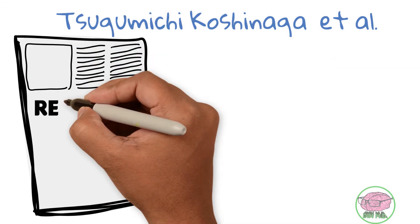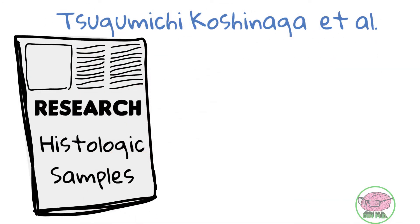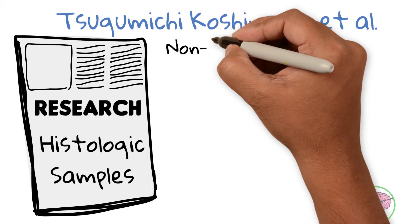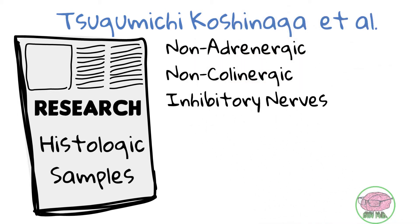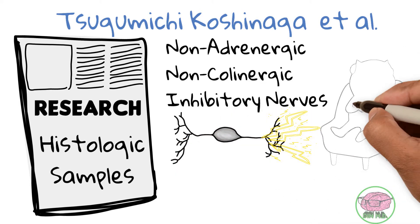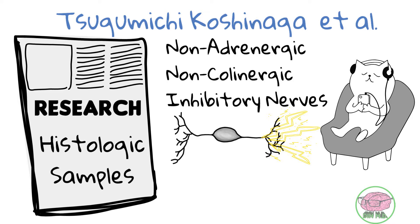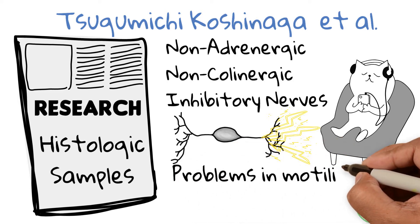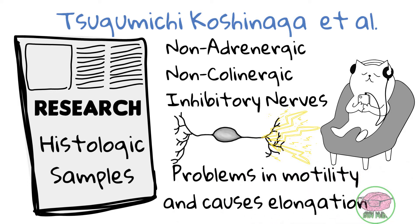Research by Cochinega included gathering histological samples of smooth muscle from colons of both volvulus and non-volvulus patients. They discovered that non-adrenergic non-cholinergic inhibitory nerves, when activated in the volvulus colon, cause over-relaxation of muscle fibers, leading to dilation, motility problems, and further elongation predisposing to volvulus.